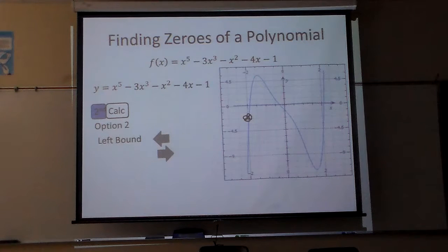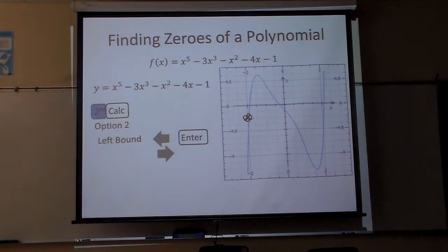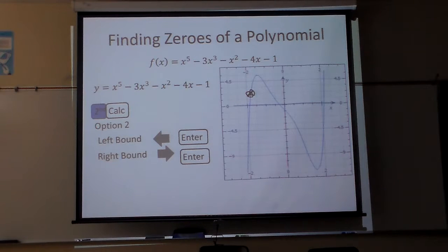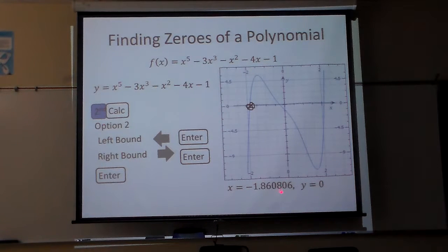And then once I hit left of it, I'll hit enter. And then I'm going to have to arrow again. That's what this right one is here. Arrow until now it's what? There. I'll hit enter one more time. And then I hit enter again, and it will tell me that the answer is this. That one of the x's occurs at negative 1.86, and y is zero.